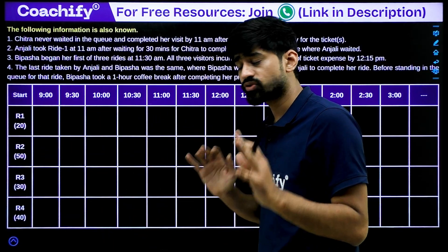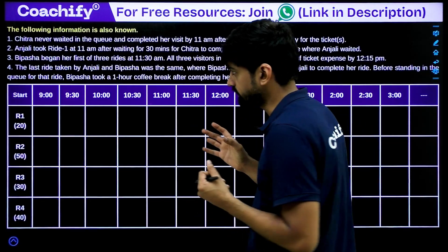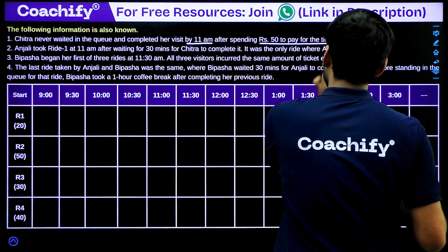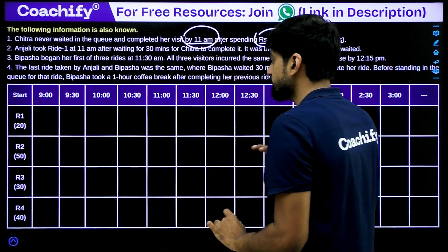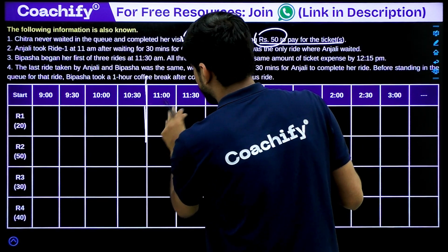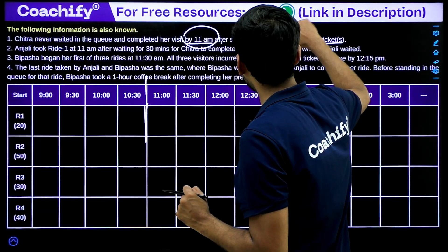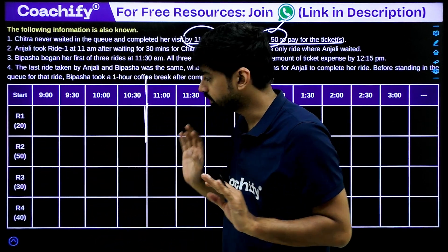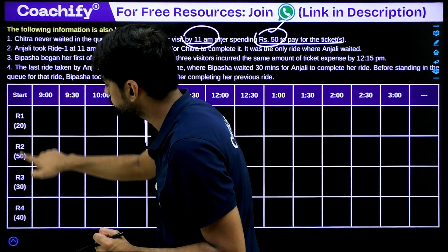The first clue: Chitra never waited in the queue and completed her visit by 11 a.m. after spending rupees 50 on tickets. So Chitra is not present in the park after 11 a.m. — meaning the last slot for Chitra is 10:30 to 11. Chitra spending exactly 50 rupees can happen in two ways: either she takes only ride 2 (rupees 50), or she takes ride 1 plus ride 3 (20 + 30 = 50).